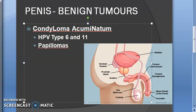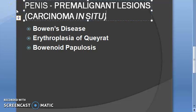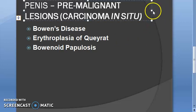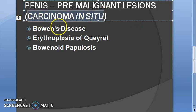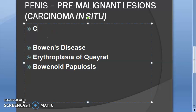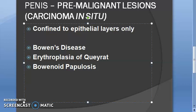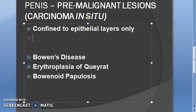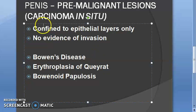The focus here is pre-malignant lesions, also called carcinoma in situ. What does carcinoma in situ mean? 'In situ' means 'within.' Carcinoma in situ means the malignancy is confined to the epithelial layers only — there is no evidence of invasion beyond those layers.